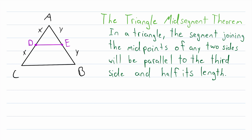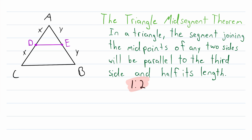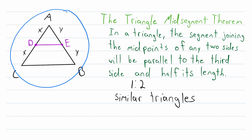To continue the proof, let's take a closer look at what we're trying to prove. We're trying to prove that two segments are parallel, and that the length of one segment is half the length of another segment. Notice that half is a ratio — the ratio 1 to 2. When we're talking about triangles and ratios, a concept that should immediately come to mind is similar triangles. Of course, to talk about similar triangles, we need two triangles.